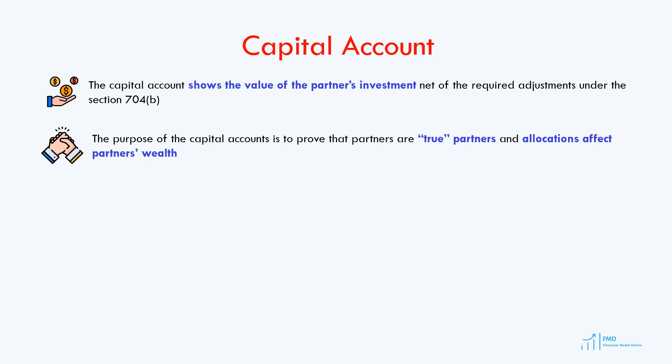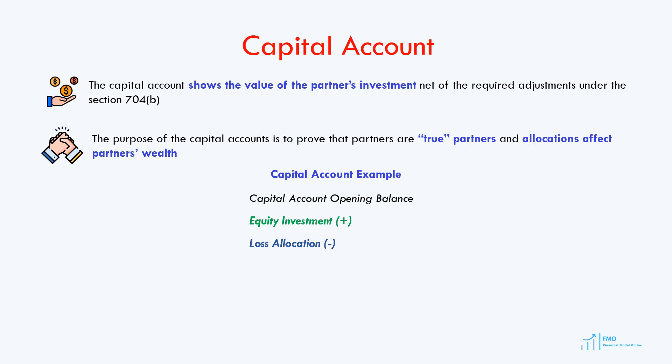Let's take a look at the capital account structure. We start with the capital account opening balance, and then we add the equity investment — so the partner's investment into the partnership increases his capital account balance. The first adjustment is the loss allocated to the partner, which decreases his capital account. Next, income allocation to the partner increases his capital account balance. Finally, cash distributions made to the partner decrease his capital account. Summing all of these items, we get to the capital account closing balance.